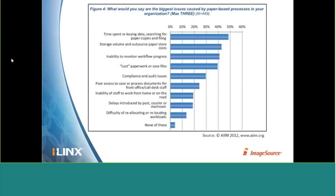AIIM assembled information from 449 respondents, 26% of which were federal, state, and local government agencies. They found that top issues dealing with paper-based processes included re-keying, searching for, and filing the paper, with 55% of respondents still re-keying paper form data into some line of business or back-office system. Another obvious drawback is the hard dollar costs — the initial printing of forms, mailing a completed form, moving paper around during processing, and finally the storage and management of all that paper.